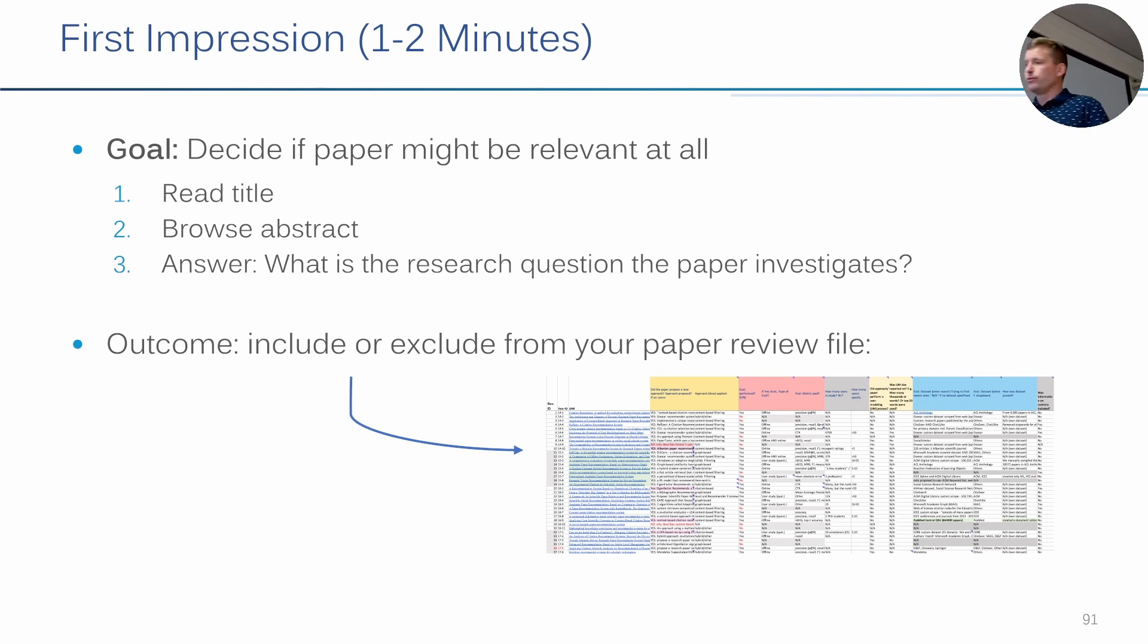So, what does it look like? Well, the first one, and this is really quick, as you said, read the abstract. It's one to two minutes, read the title, read the abstract, or browse the abstract. Two minutes can be hard to read the abstract completely, and just decide, is this paper relevant at all, or does it do something completely different to what I'm interested in? So, title, maybe keywords, and a glimpse over the abstract, really short.